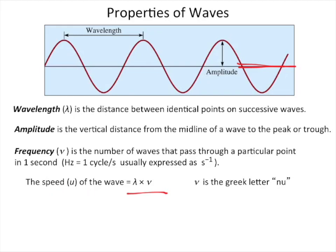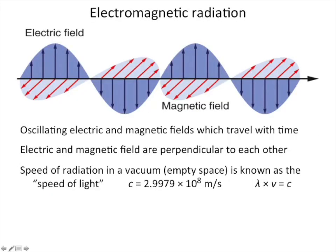If you want to know the speed of this wave, that is the wavelength times the frequency, and that gives you speed. So that's properties of waves. Now, the previous slide, properties of waves, is true for any kind of wave. Pressure waves through air, which is sound, waves in an ocean, or electromagnetic radiation.